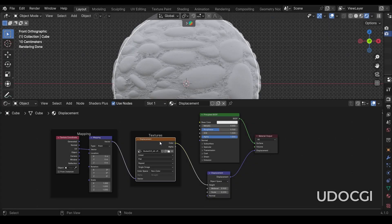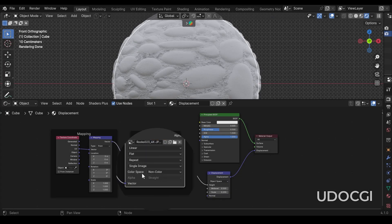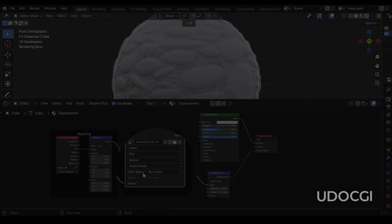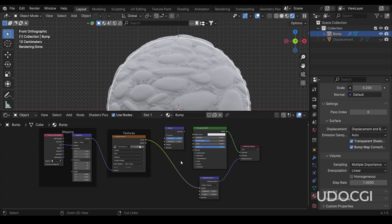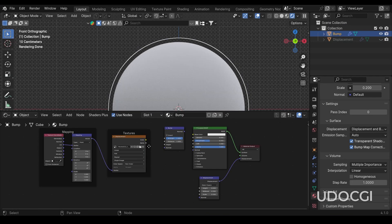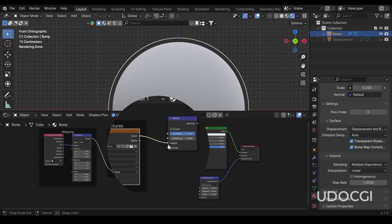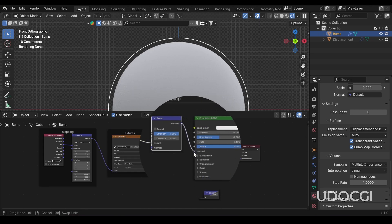Since height maps represent elevation data rather than color, they use non-color space. You can also use a height map as a bump map by connecting it to the height input of a bump node, then plugging the bump node into the normal input of the principal shader.